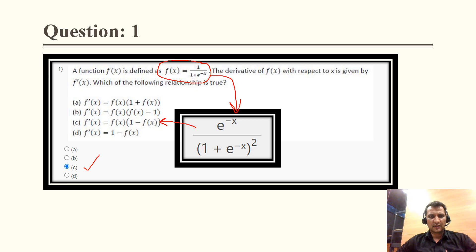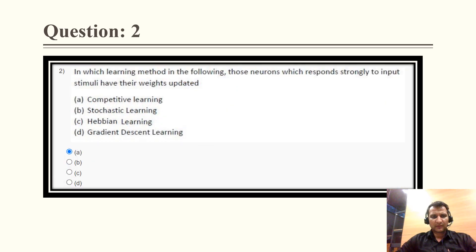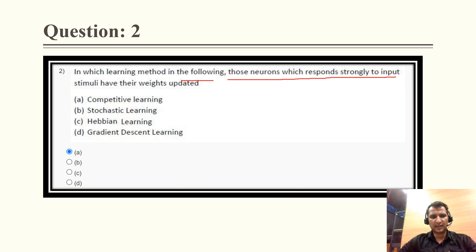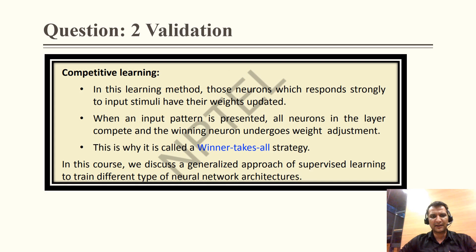Question 2 asks: in which learning method do those neurons which respond strongly to input stimuli have their weights updated? The correct answer is option A, that is competitive learning. In competitive learning, those neurons which respond strongly to input stimuli have their weights updated.